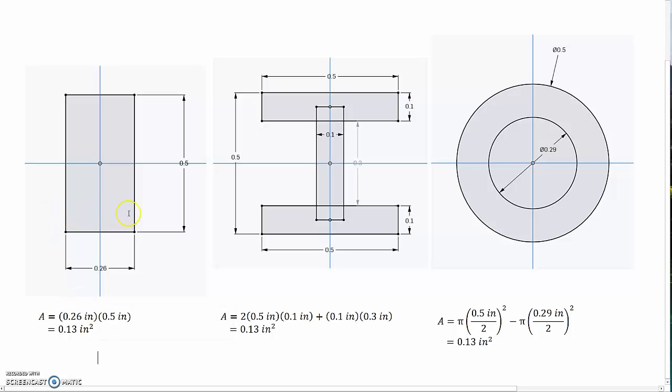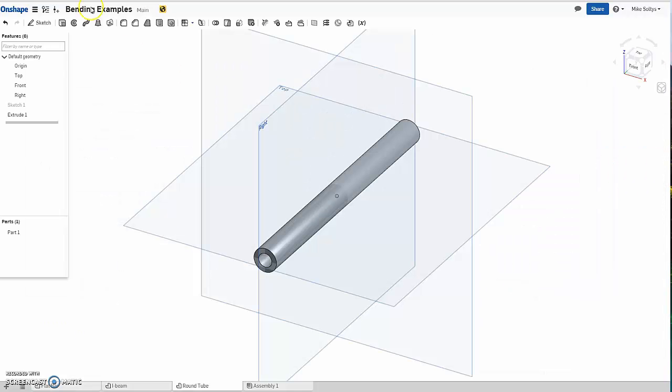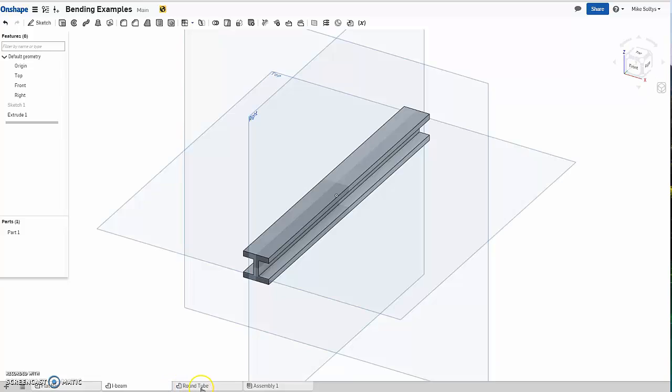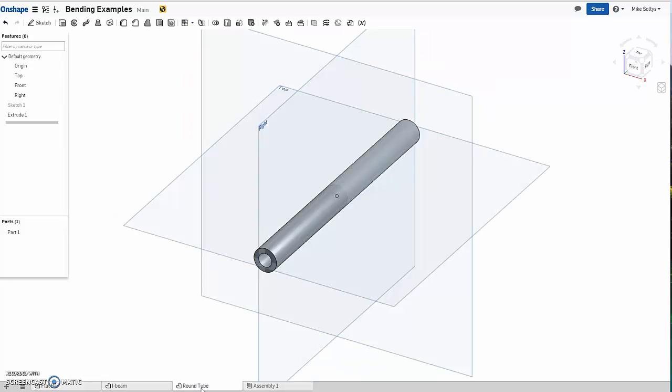I have just a really simple rectangular beam, a shape that looks kind of like an I-beam, and then a shape that's actually a hollow pipe. I went into Onshape, which is a free online CAD program, and drafted up these three different shapes, and then using a 3D printer, I printed them using a flexy material called NinjaFlex.